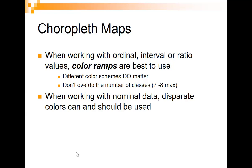Our color schemes do matter. You want to put seven to eight colors at a maximum, because eventually you won't be able to match up the county with the class it's supposed to be in. When we make a map, essentially we're squishing the data — we're giving it a range of values. If we get too many classes, the colors will start to blend into each other.